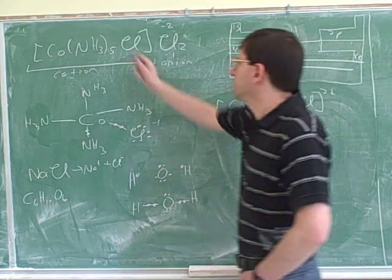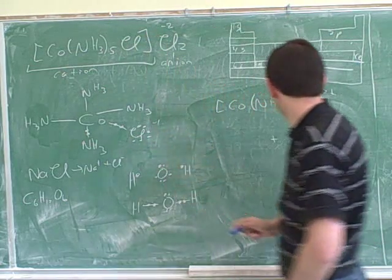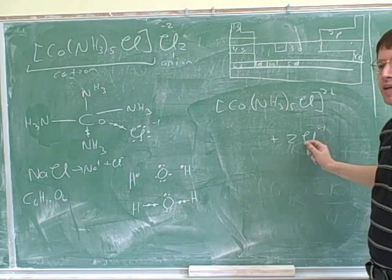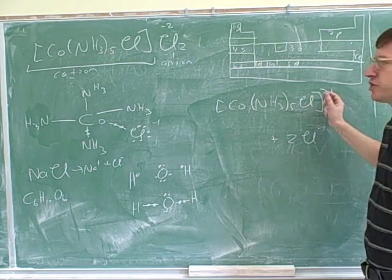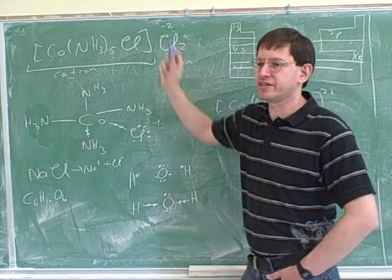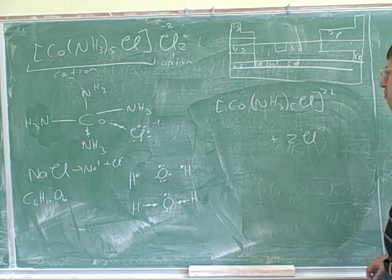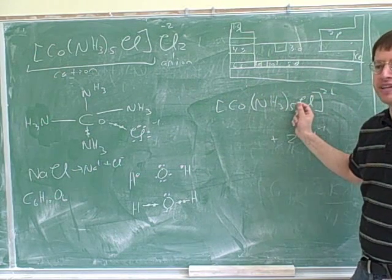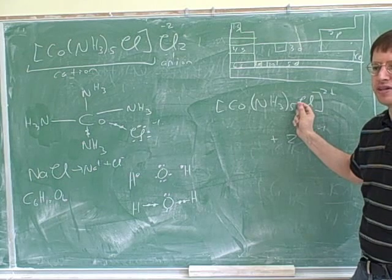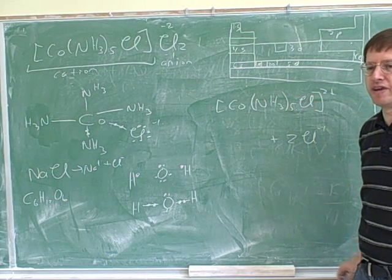So in the solid, these are connected by ionic bonds, but in solution, they would separate into these separate ions. How do I know there's a 2 plus charge here? To balance the two chlorides. But this is not going to separate in the solution. This will still be a single unit, because we're thinking of these as covalent bonds.